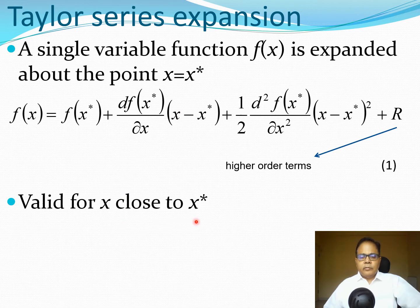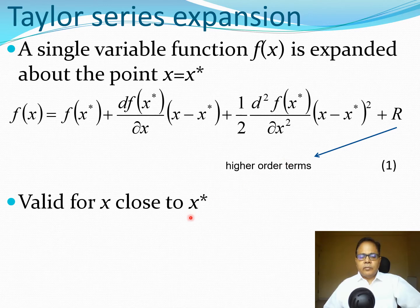The important point to remember is that when we use a truncated Taylor series expansion — essentially using the first two terms involving the first two derivatives — this is only going to be valid in the neighborhood of the point x*.